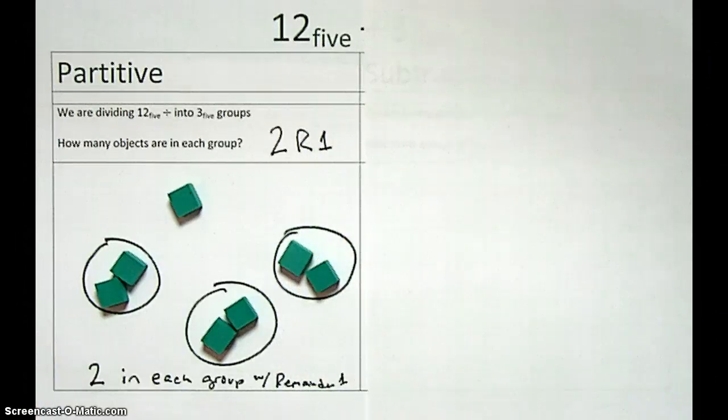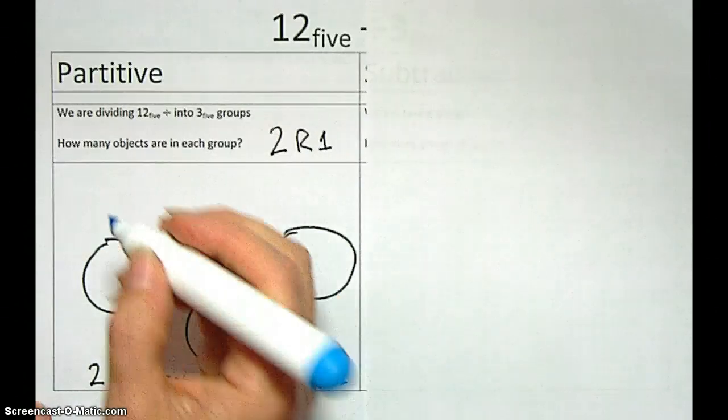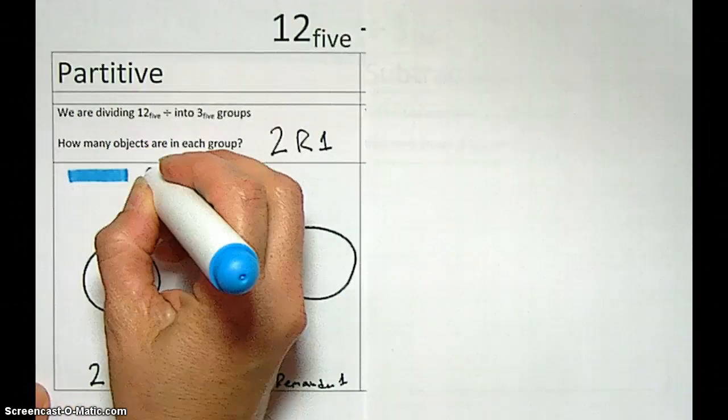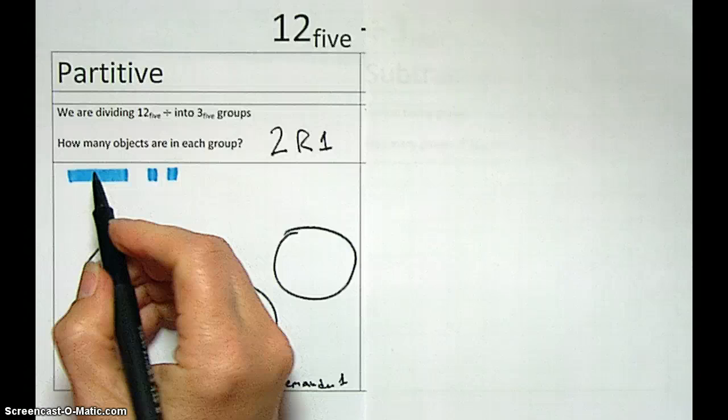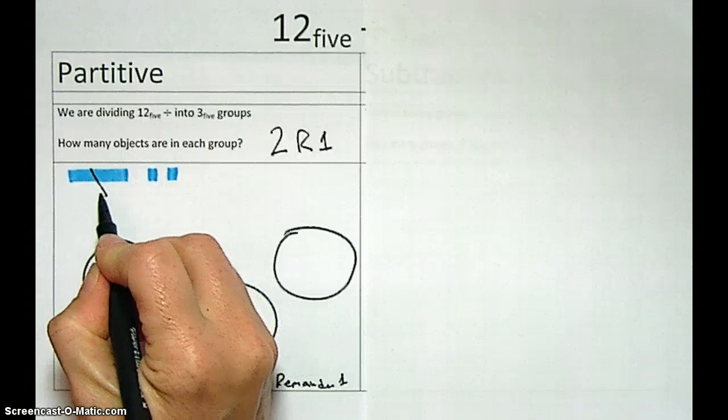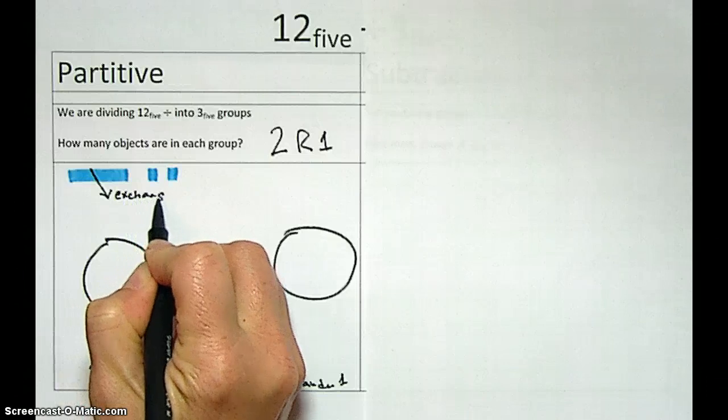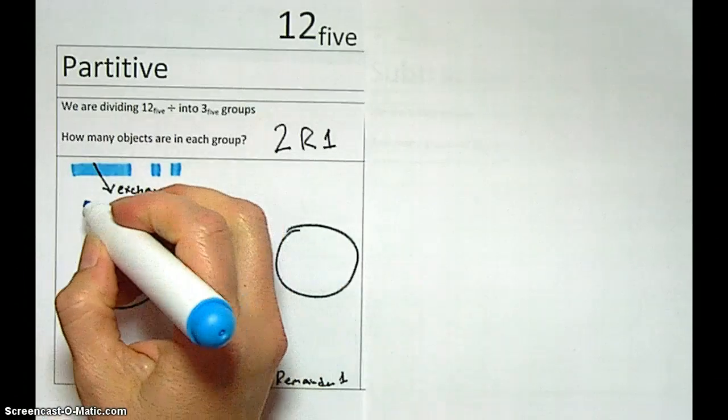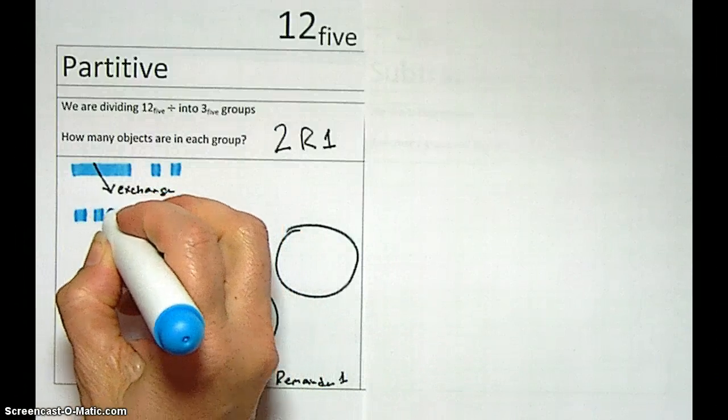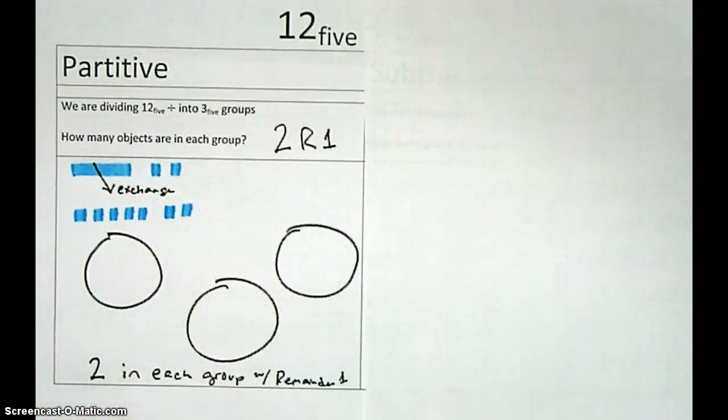And if we wanted to draw that from the start, we would have to go like this. We started out with a 1, 2, base 5. We need to make an exchange right here and turn that into 1, 2, 3, 4, 5. And then the 2 we originally had. And then we need to deal these guys out.